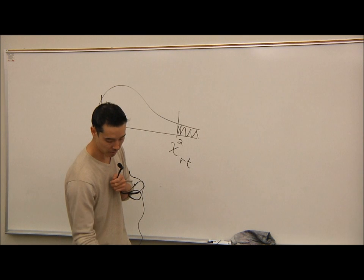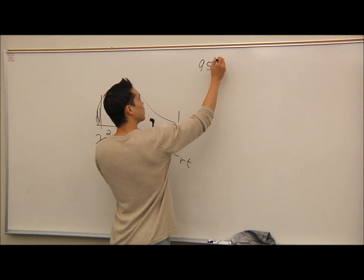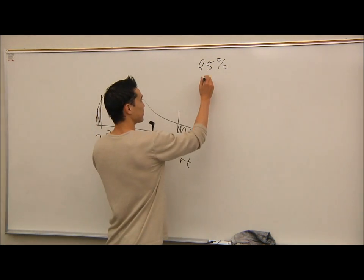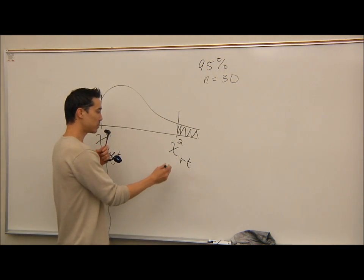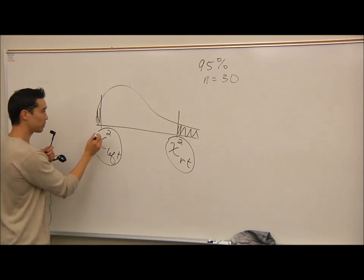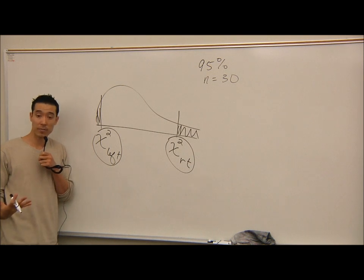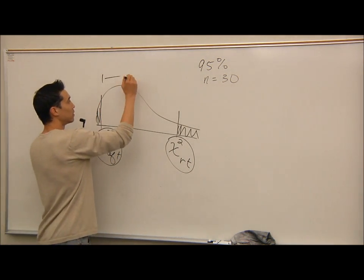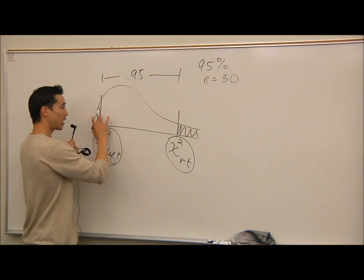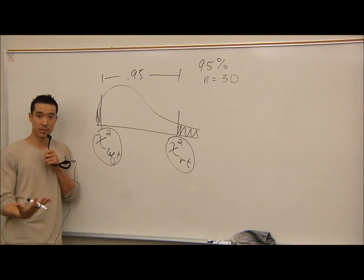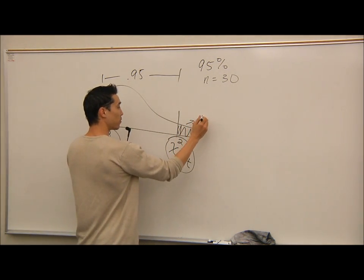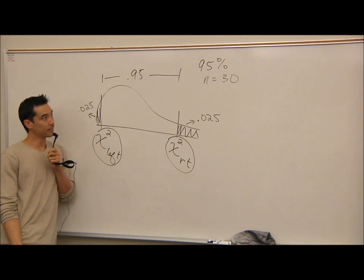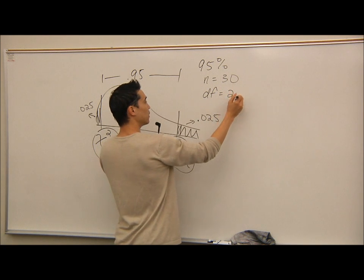Let's do a practice example just to go through how it works. We're going to find a 95% confidence interval with a sample size of 30. I want you to find chi-square right and chi-square left for this setup. If the confidence level is 95%, that is the middle area — so the middle area is 0.95. That leaves alpha = 0.05, and split in half gives 0.025 in each tail. If n is 30, the degrees of freedom is n minus 1, which is 29.